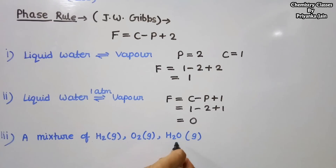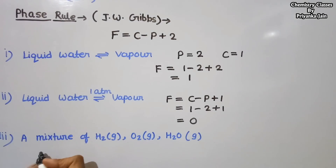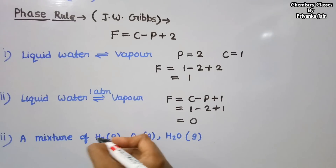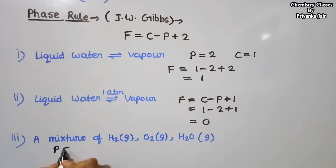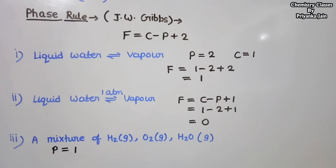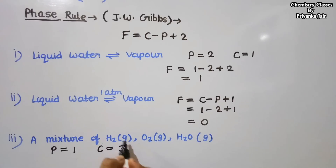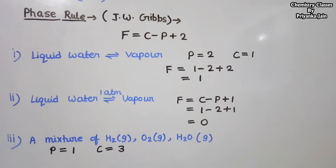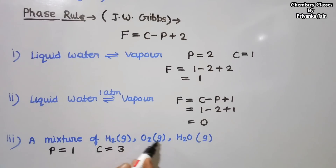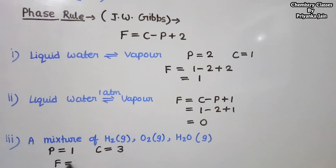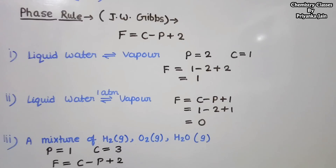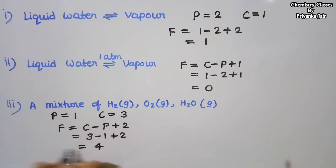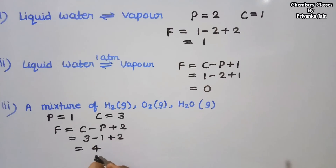Now consider a mixture of H₂ gas, O₂ gas, and H₂O gas. If we simply take this mixture of three gases, the number of phases is one (gases form a single phase). The number of components is three, because we are taking a mixture of three different gases and need to know the concentration of all of them. So F = C − P + 2 = 3 − 1 + 2 = 4. The degree of freedom is four: temperature, pressure, and the concentrations of two of the components.